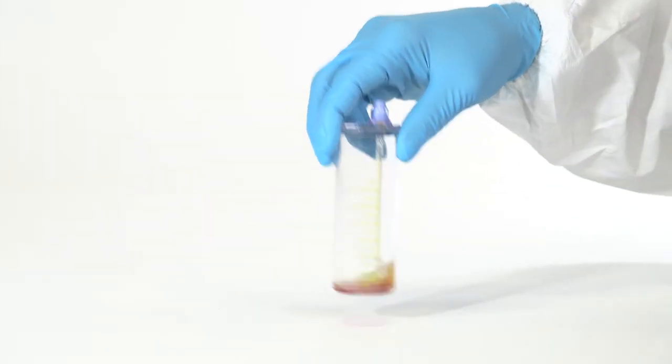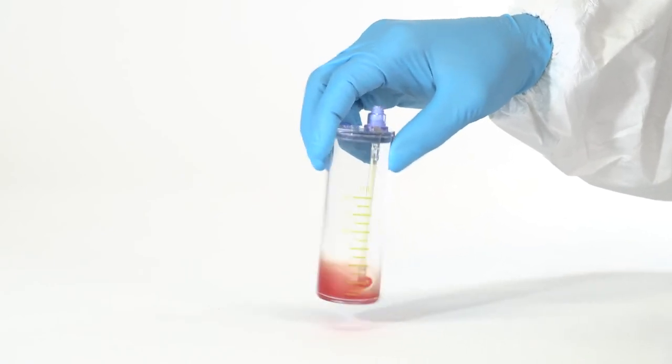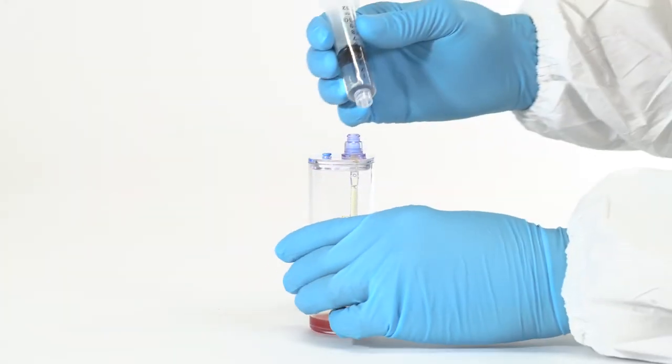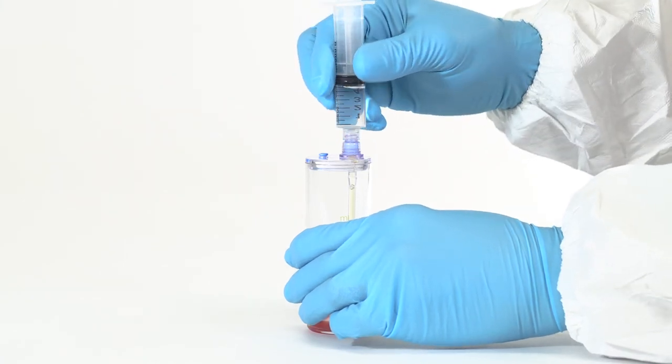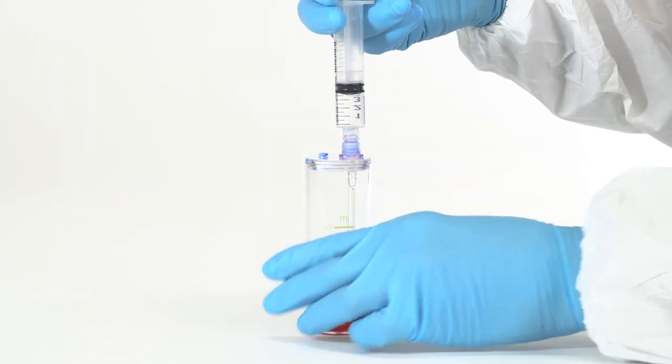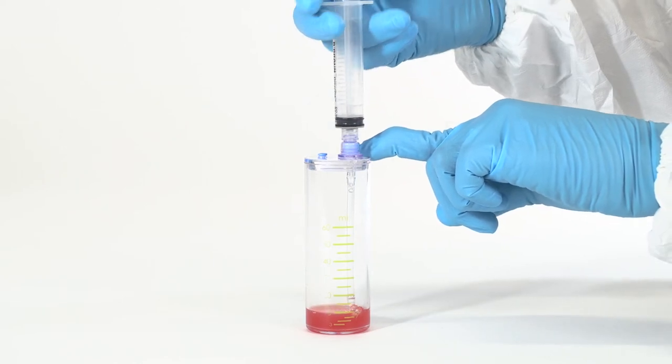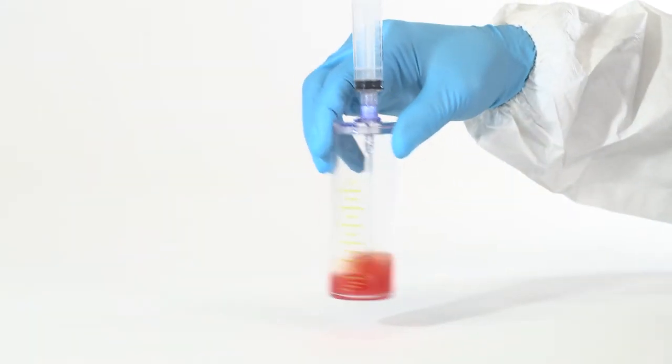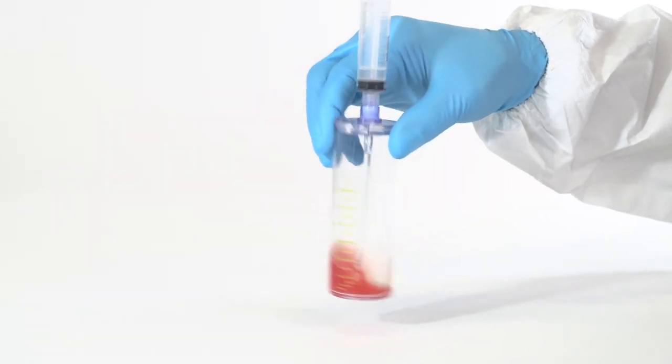Vigorously re-suspend the platelets into the plasma. Then add approximately 5 milliliters of normal saline to the accessory device. Re-suspend the saline into the solution creating 7 milliliters of no-burn PRP.